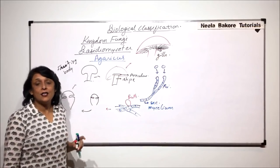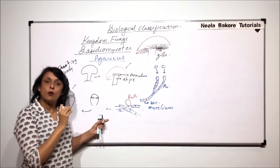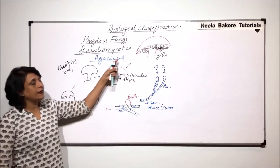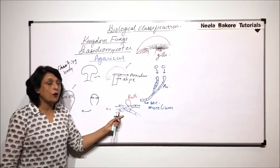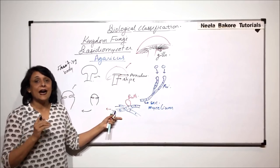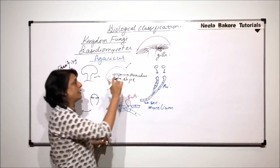If we enlarge the gill, we will see exactly what is there. But one thing which we have to remember is that all these structures, they are formed of the secondary mycelia or the dicharyonic mycelia.